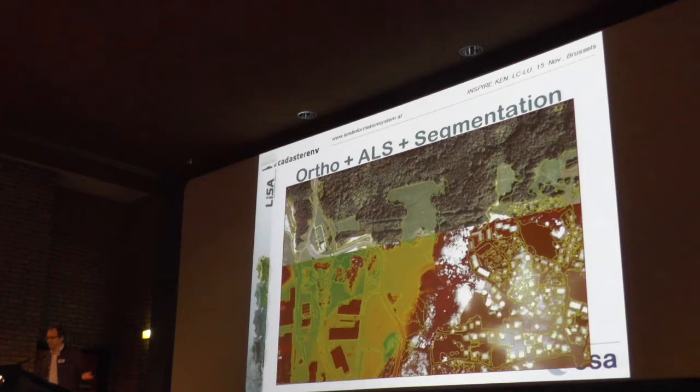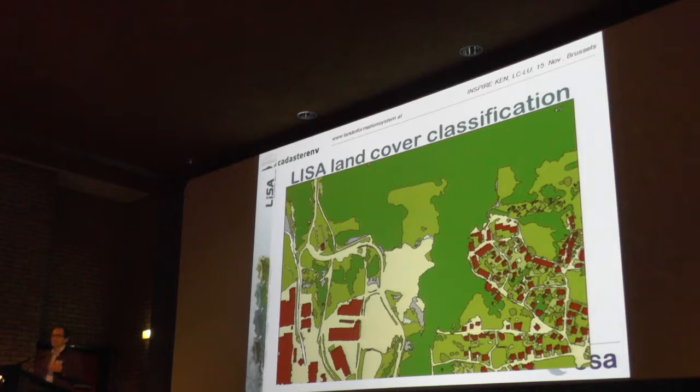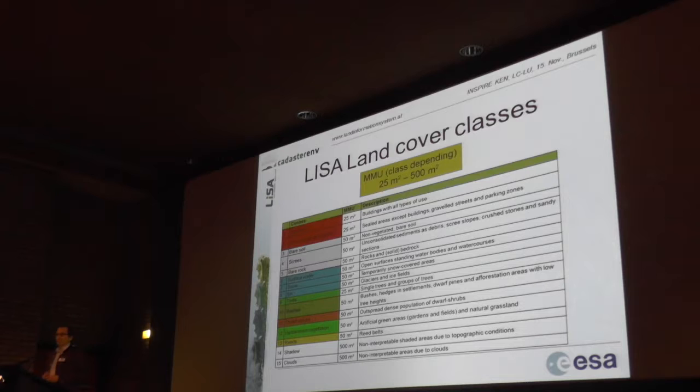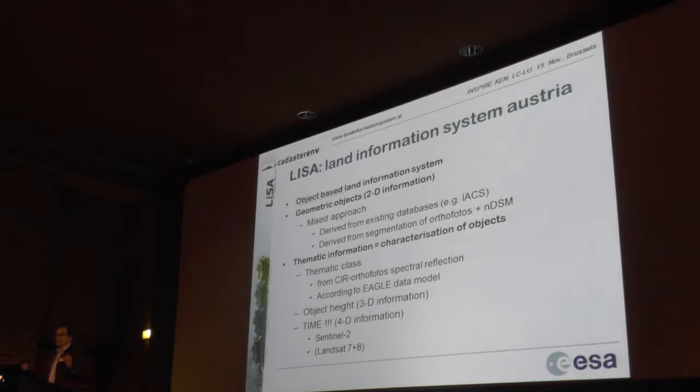Then we have segmentation, or alternatively you take existing polygons — essentially you derive objects, and those objects can be classified and attributed. We had the first attribution on a similar scale as Julian was explaining for the very high resolution data. What you see here are the main land cover components that we apply.